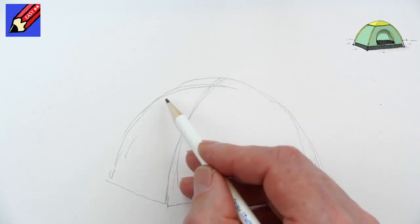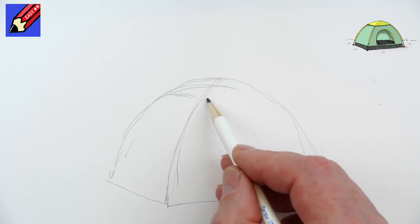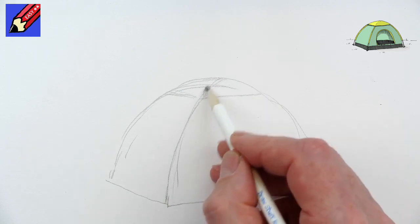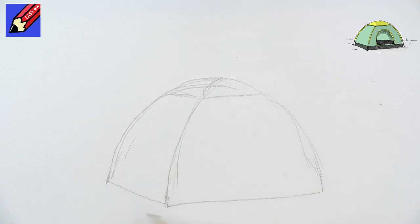Now when you're doing this, draw very gently. Don't press too hard because we're going to erase all this later. Then we have this little canopy up at the top. This is where the rods are coming down and hitting the ground.